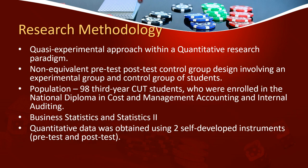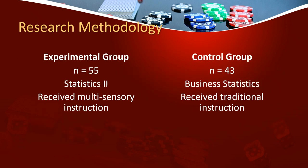The research methodology employed in this study was a quasi-experimental approach within a quantitative research paradigm. I made use of a non-equivalent pre-test/post-test control group design involving an experimental group and a control group of students. The population consisted of 98 third-year CUT students enrolled in the national diploma in cost and management accounting and internal auditing. The two subjects were Business Statistics and Statistics 2. Quantitative data was obtained using two self-developed instruments: the pre-test and the post-test. The experimental group was 55 students and the control group was 43 students.